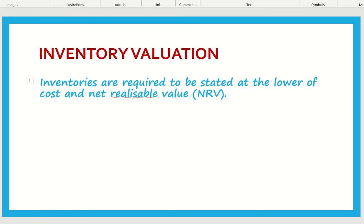For the valuation of inventory, you should first find out the cost of inventory and then the net realizable value. The rule to record inventory is: inventory is required to be stated at the lower of cost and net realizable value. The NRV formula is: estimated selling price minus any expenses to make these goods saleable.